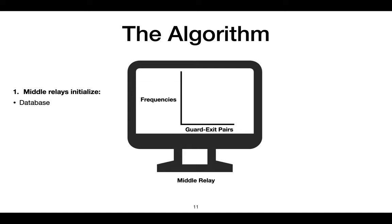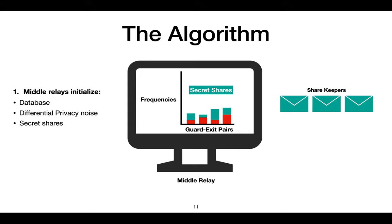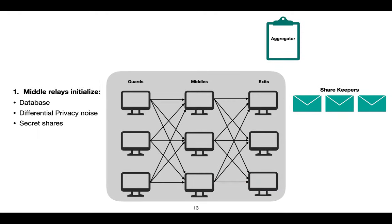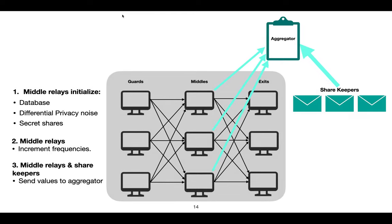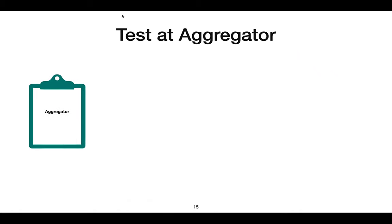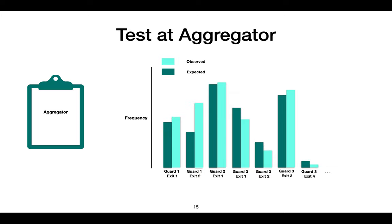The middle relays will be our data collectors. They first initialize the database of guard-exit pairs and their corresponding frequencies, and the noise and secret shares required for differential privacy and additive secret sharing, and send the secret shares to some share keepers. During the data collection phase, when the middle relays see a circuit from a guard to a particular exit, they increment the appropriate frequency counter. At the end of an epoch, the middle relays and share keepers send their values to the aggregator, who combines them to obtain the frequencies and performs the statistical test to detect pairs with unusually high observed frequencies. The operator of the algorithm can then decide how to proceed given these test results.